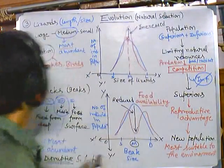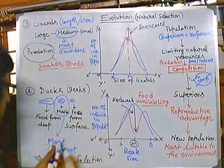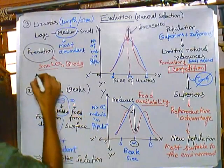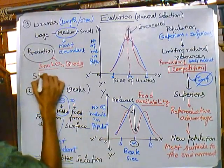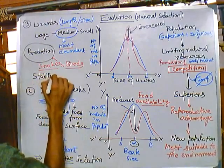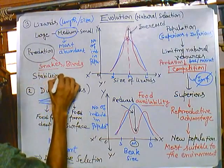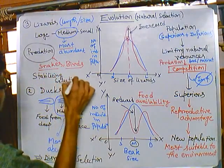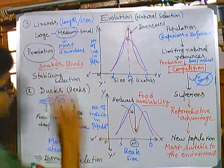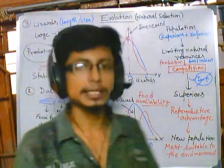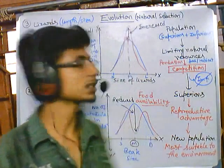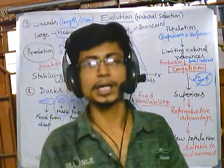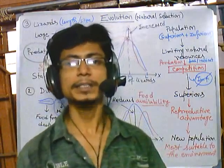Since this particular trait is being stabilized, we call this stabilizing selection. This is the last type of natural selection we need to discuss — it is called stabilizing selection.